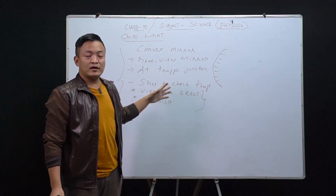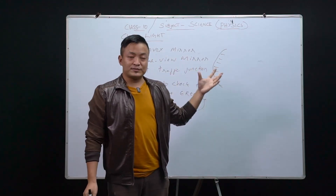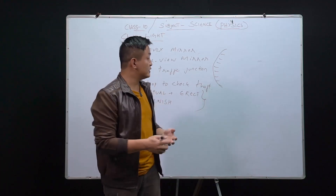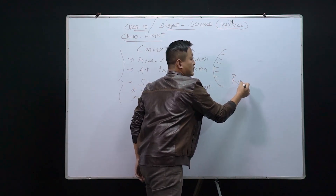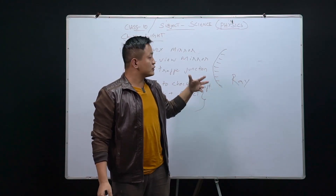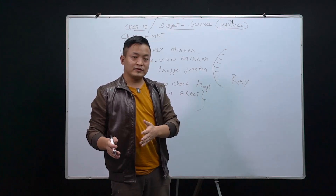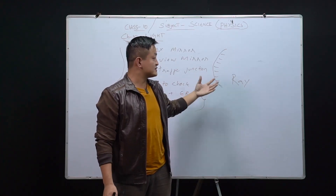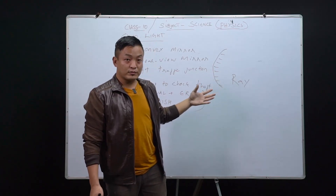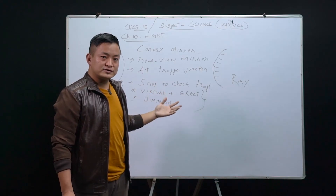We are done with the uses of convex mirror. Today the important part of this chapter is you have to know how to draw a ray diagram. We have the concave mirror part and the lens part, so today we'll discuss and practice drawing the ray diagram for image formation for the mirror.